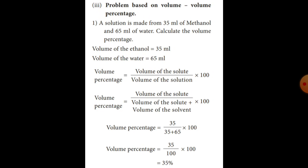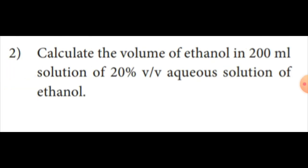Problems based on volume percentage. A solution is made from 35 mL of ethanol and 65 mL of water. Volume percentage = volume of solute / volume of solution × 100 = 35 / (35 + 65) × 100 = 35%.